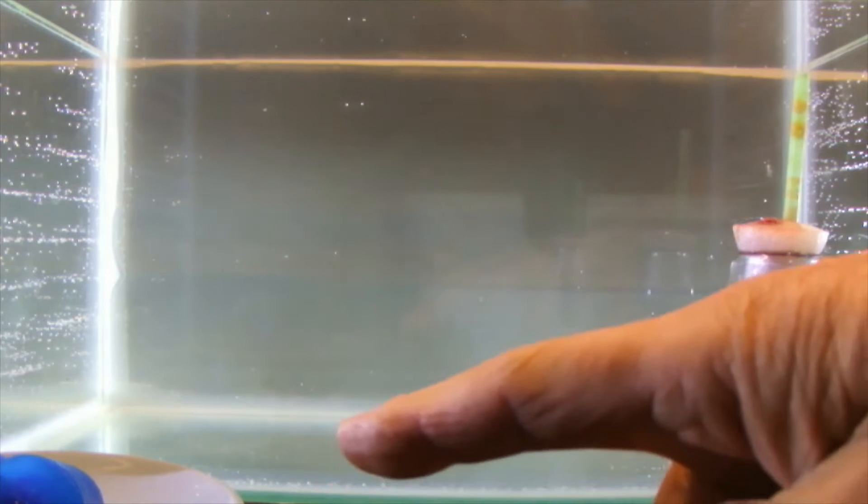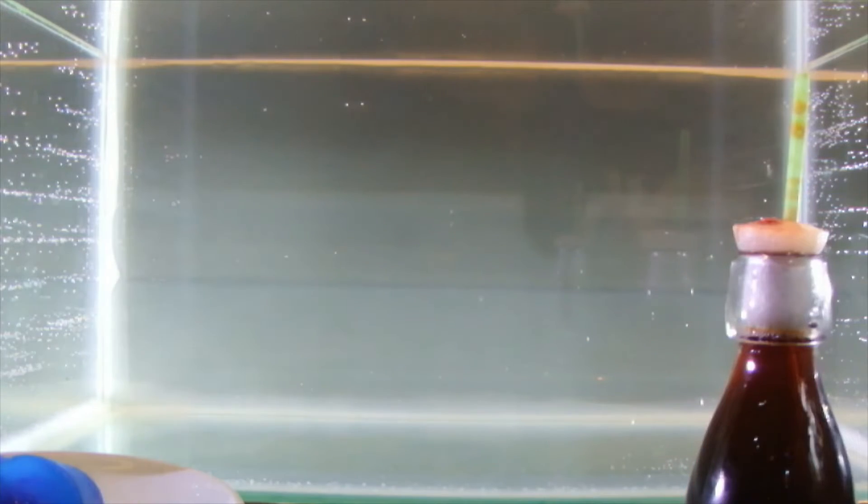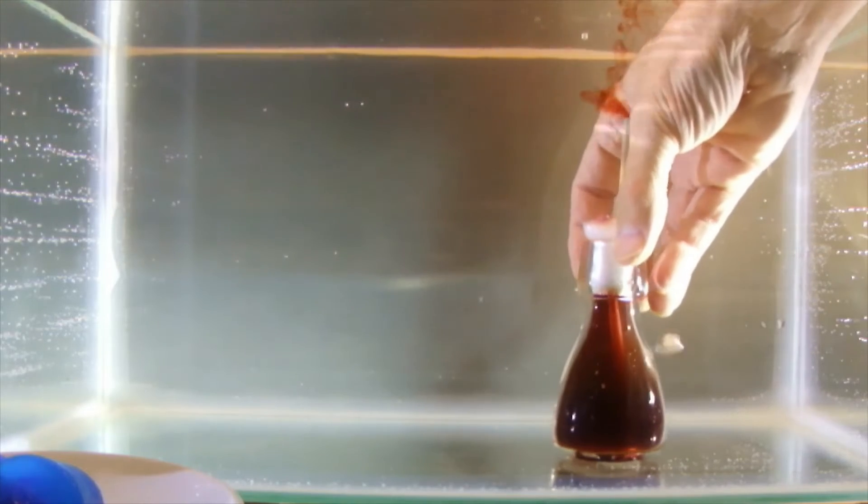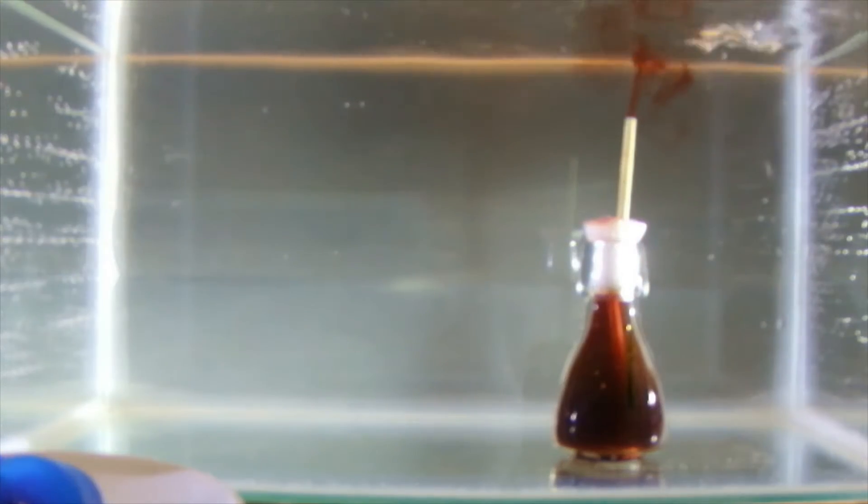On the left there are some ice cubes colored blue with blue food coloring. When I put the bottle into the tank of water, the hot water is less dense than the water around it, and therefore the red water rises.